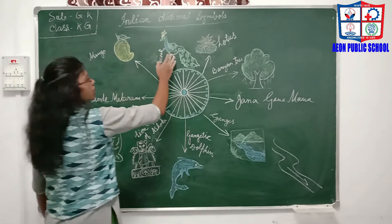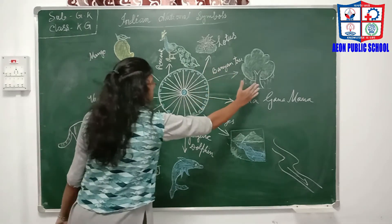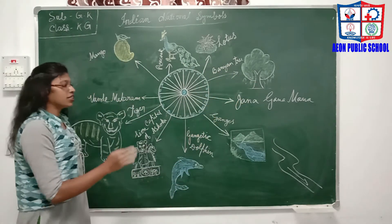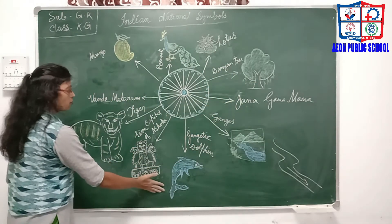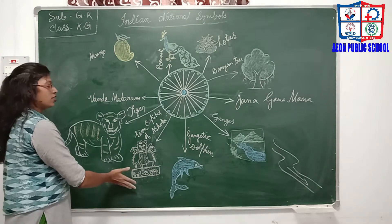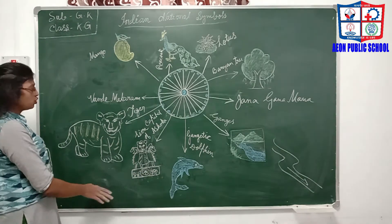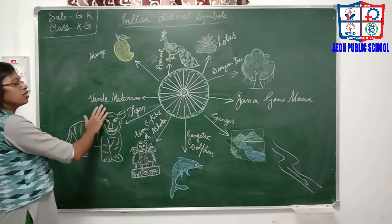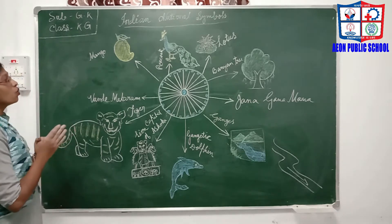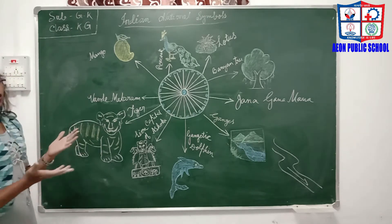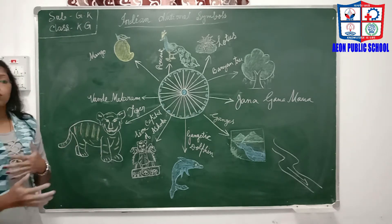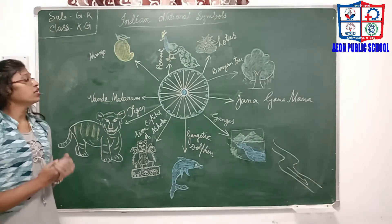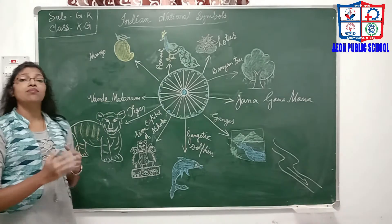Mango, Peacock, Lotus, Banyan Tree, Jana Gana Mana, the Ganges, the Gangetic Dolphin, the Lion Capital of Ashoka, Tiger, and Vande Mataram. We have to know what each of these represents — their national identity and what they symbolize.